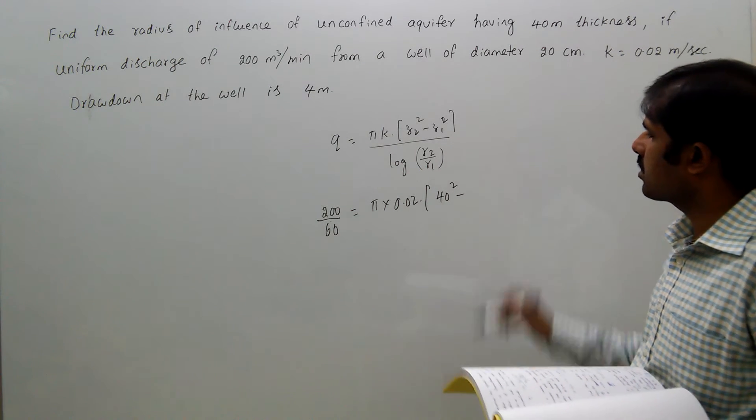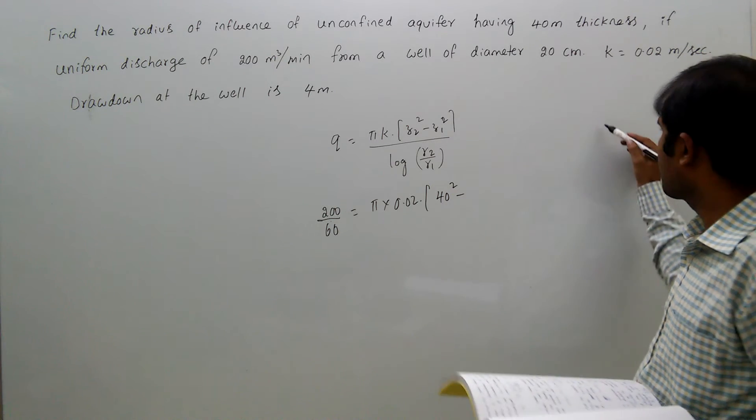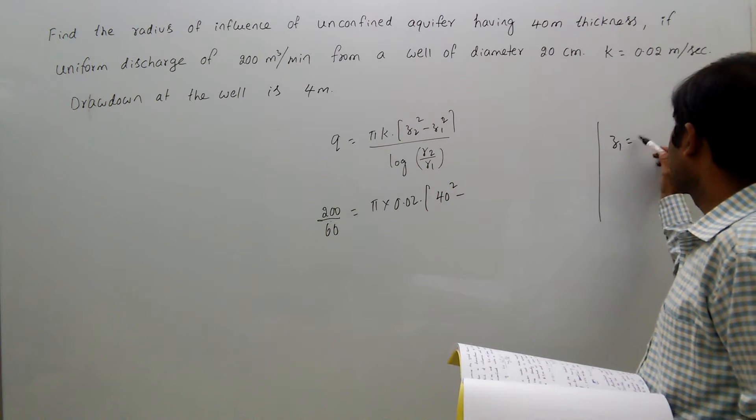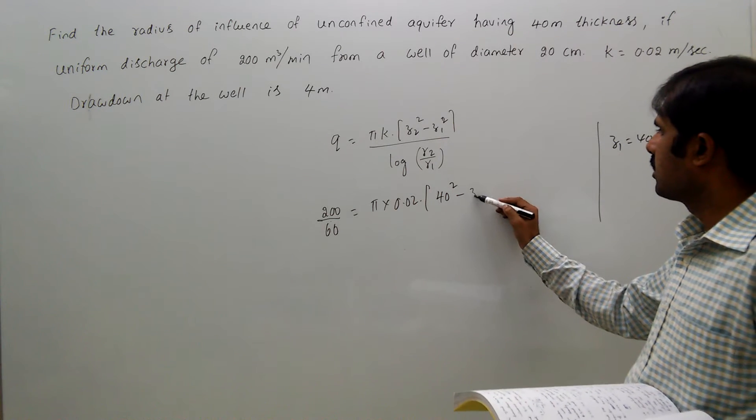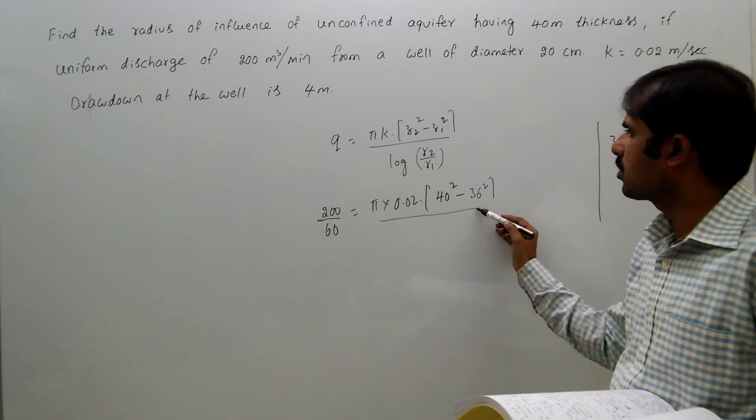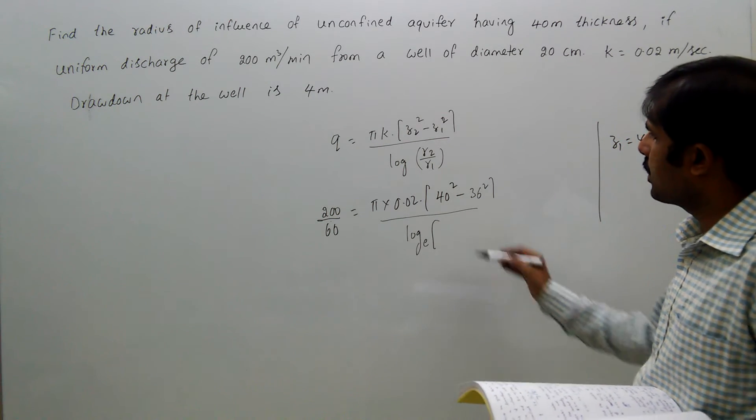40 square minus z1. 4 meters drawdown means z1 equals 40 minus drawdown, which is 36 meters. So 36 square divided by log of, the radius of influence we need to find is r2.